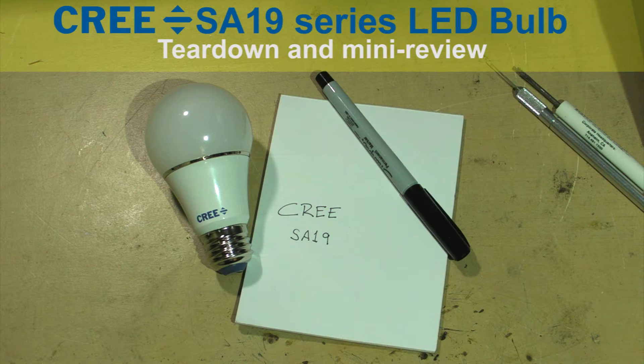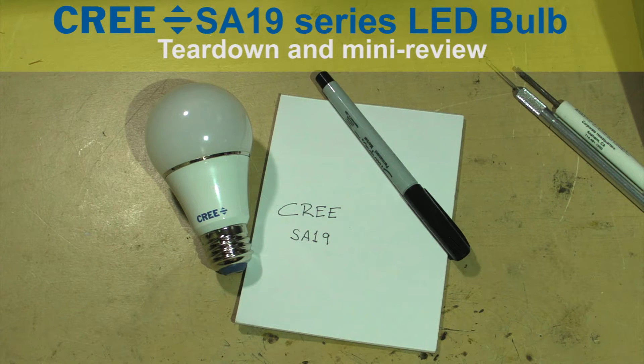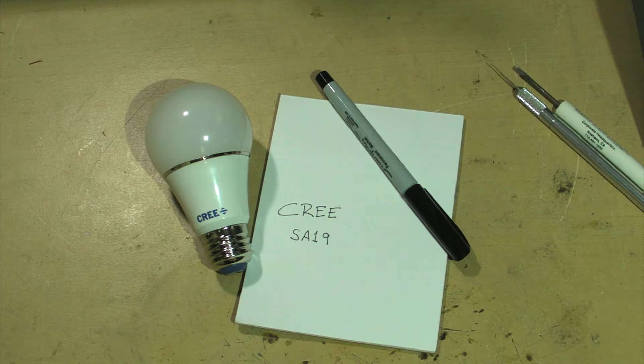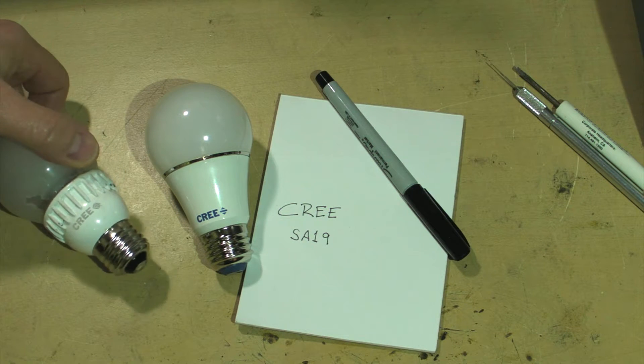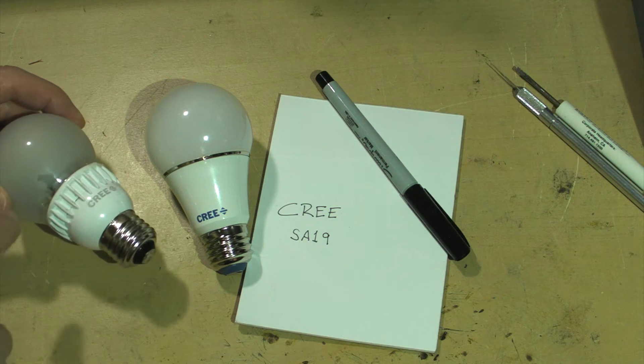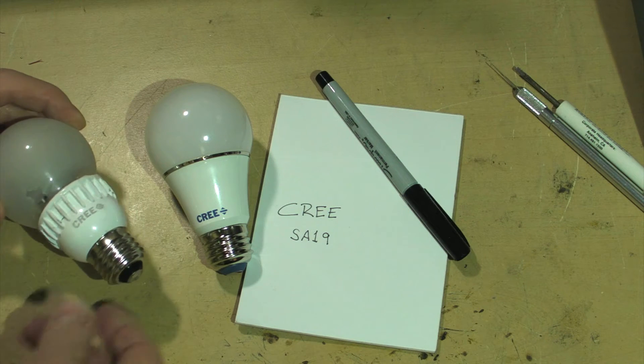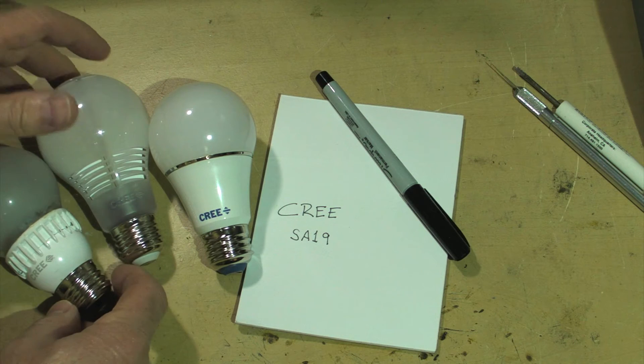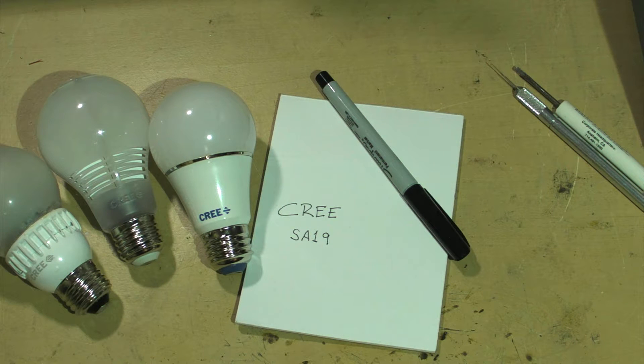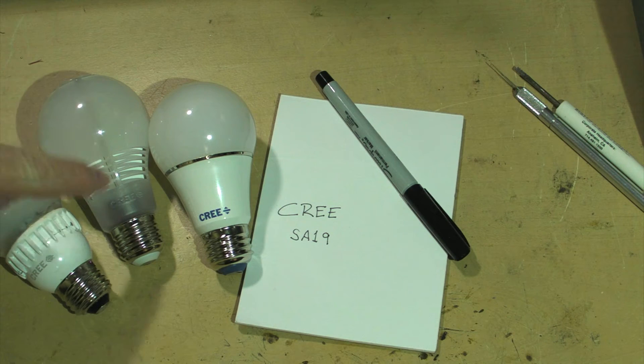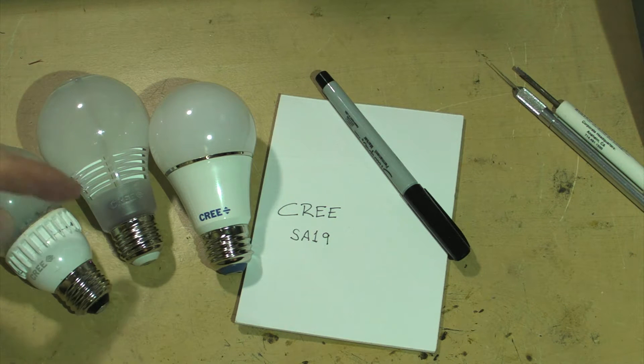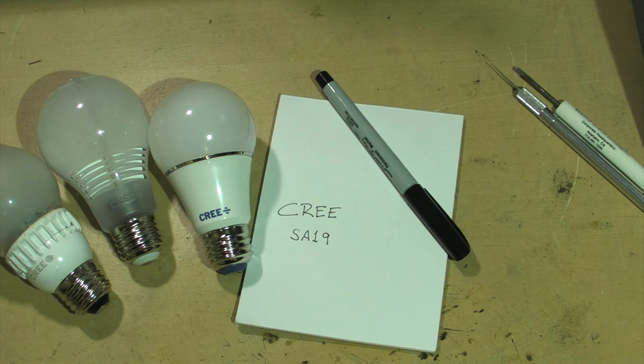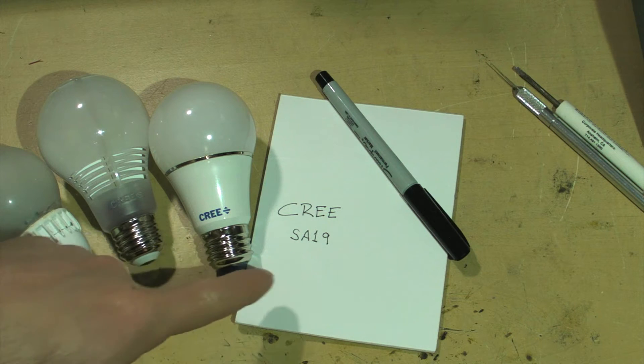Welcome to my Cree SA-19 series teardown and review. This is the third generation of the Cree LED bulb. I had the first generation with its flaking silicon coating, the second generation, the four-flow with the all-plastic envelope and nice flow-through ventilation. In the third generation, now the SA-19.